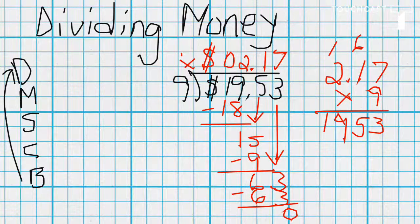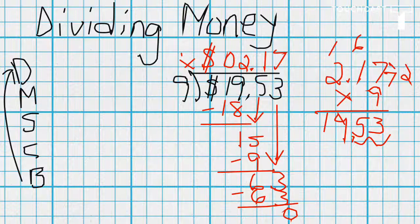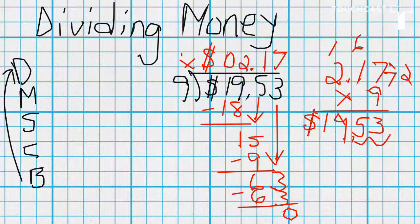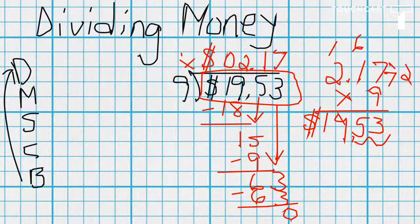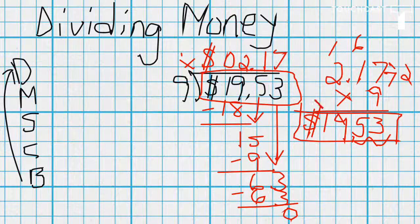And the decimal point here is two places from the right, so we've got to move it over two places from the right, so that would put it right there. And we add our dollar sign, and notice it's the same, nineteen-fifty-three in our dividend, and nineteen-fifty-three in our check. So we have done the division correctly. That's it. Dividing money.